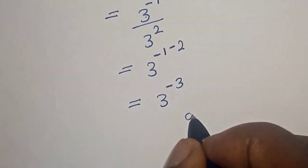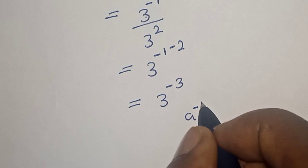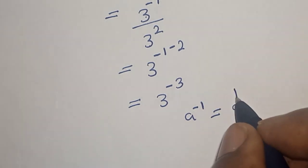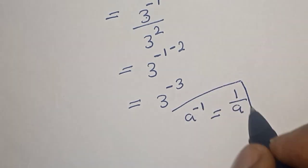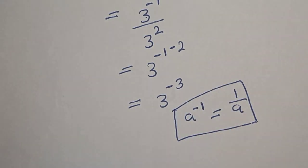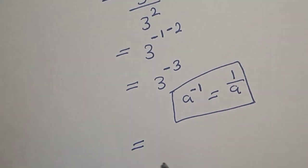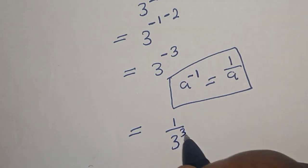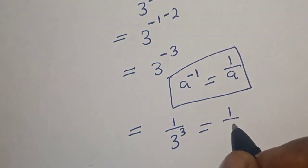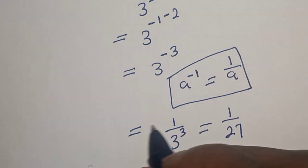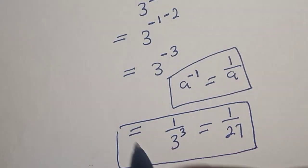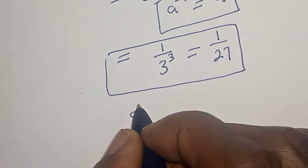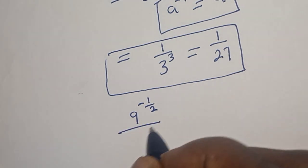If you have a raised to a negative power, this is equal to 1 over a. Therefore we have 1 over 3 raised to the power of 3, which equals 1 over 27. That is our final answer.